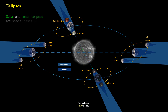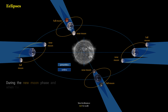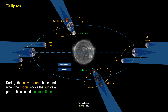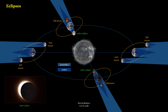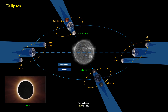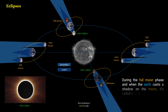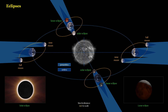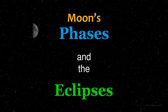Solar and lunar eclipses are special cases of the moon phase. During the new moon phase, when the moon blocks the sun or a part of it, it is called a solar eclipse. During the full moon phase, when the Earth casts a shadow on the moon, it's called a lunar eclipse.